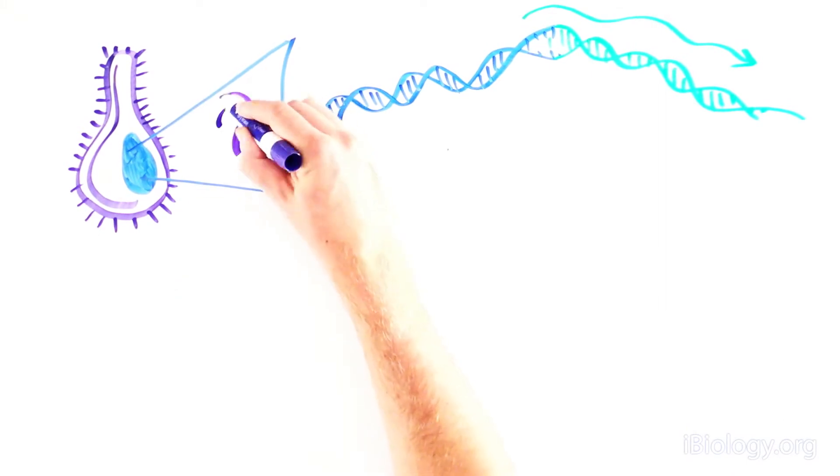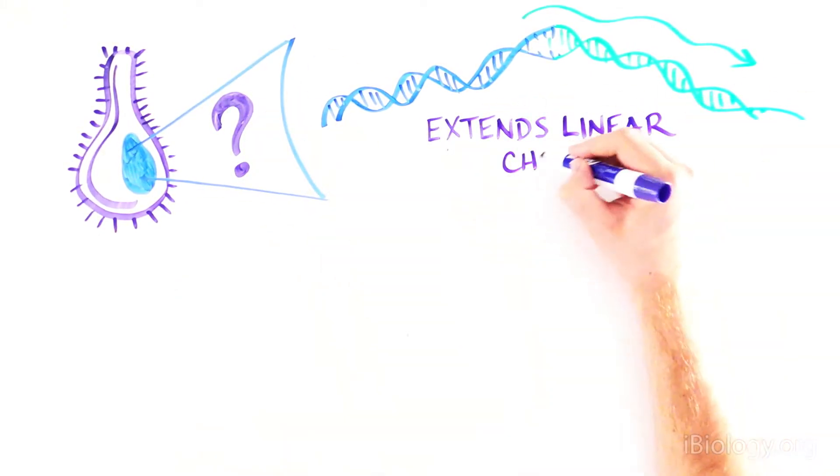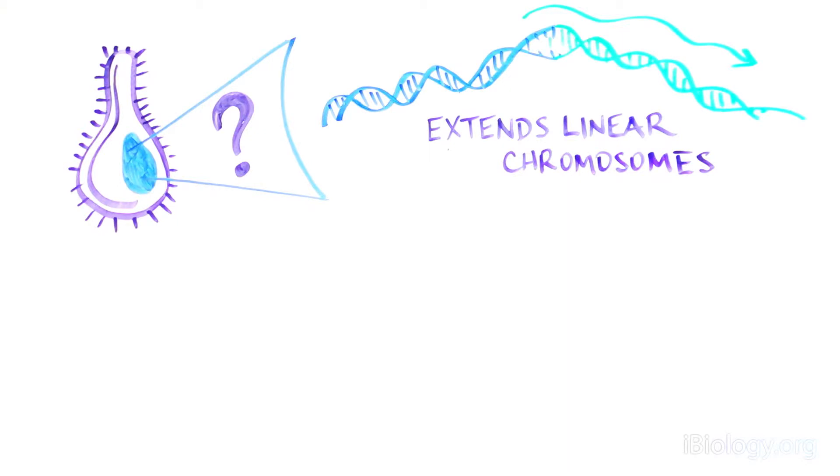So this important experiment conducted almost 30 years ago is the first evidence that there is something in the nucleus that can add a conserved sequence, TTGGGG, and extend linear chromosomes.